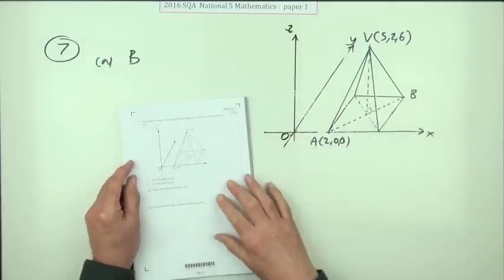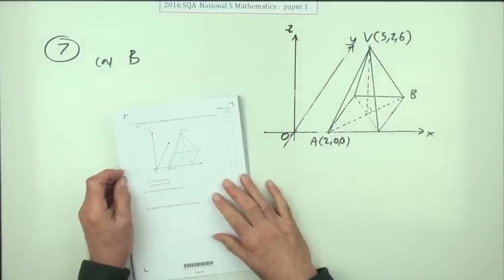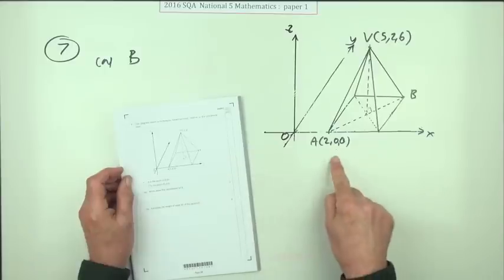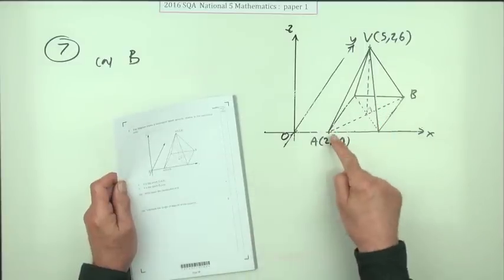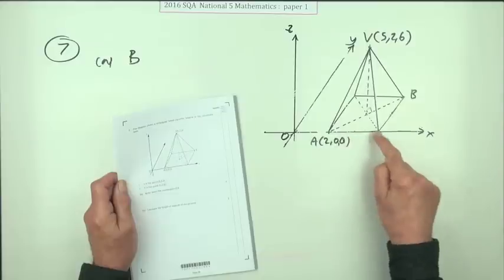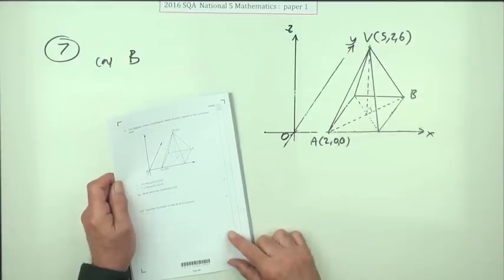So number seven then, from paper one of the 2016 National Five Maths. Here we go, three-dimensional geometry, three-dimensional coordinates. Here's a pyramid, and watch - it says it's got a rectangular base, so these two sides aren't the same.